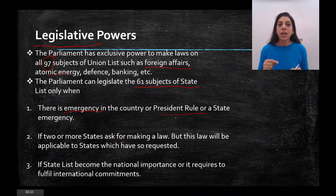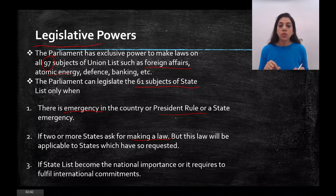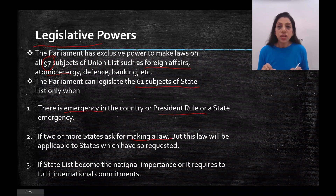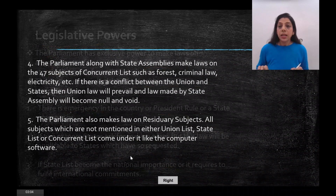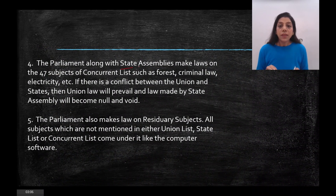Also, if two or more states request Parliament to make a law, then under that condition their request is accepted and Parliament can make a law for those particular states. Similarly, if a state list subject becomes a matter of national importance or is required to fulfill international commitments, Parliament can make laws on it.